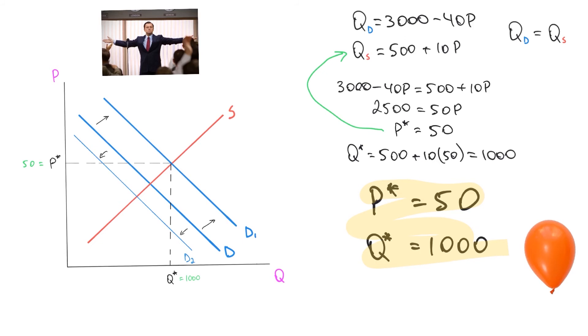Now if you chose the answer that the quantity will be lower and the price will be lower, then you're right. Which makes sense. Think about it. If people have less money, they're going to be able to buy less stuff and they won't be able to pay as much money for it. So that makes sense.